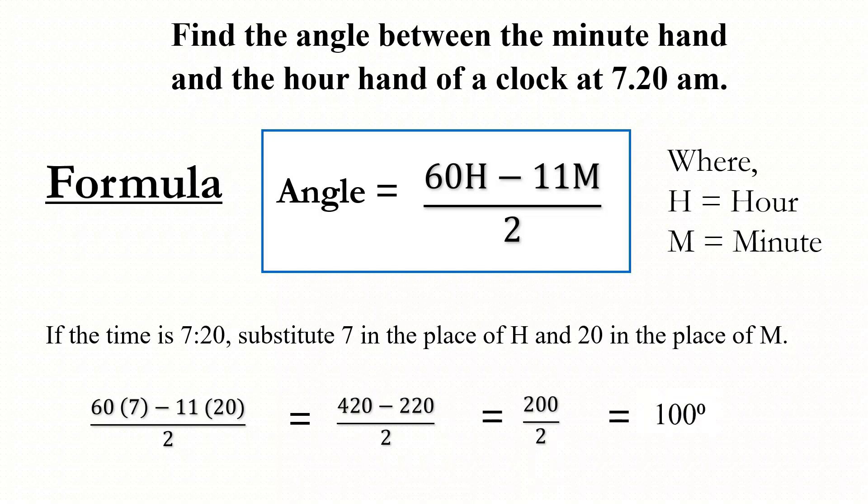Which equals 100. So the angle between the minute hand and the hour hand of a clock when the time is 7:20 is 100 degrees.